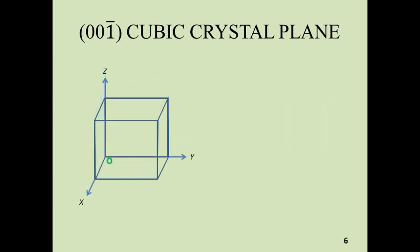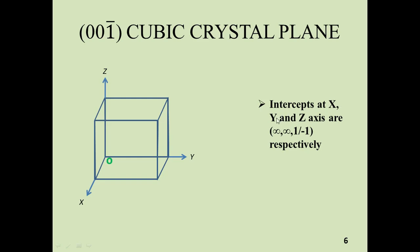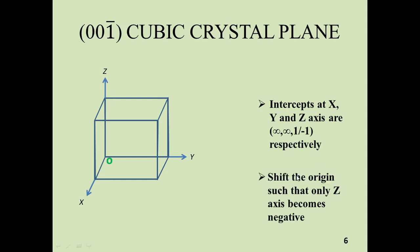Next is the (001̄) cubic crystal plane. The intercepts at the x, y, and z-axis are: infinity at the x-axis, infinity at the y-axis, and minus 1 over 1 at the z-axis. Since this intercept is negative, we have to shift the origin so that only the z-axis becomes negative. Drop the origin from this position; the new origin is this one. When you come downward from this origin, that is the negative z-axis direction, but the x-axis and y-axis are still positive.